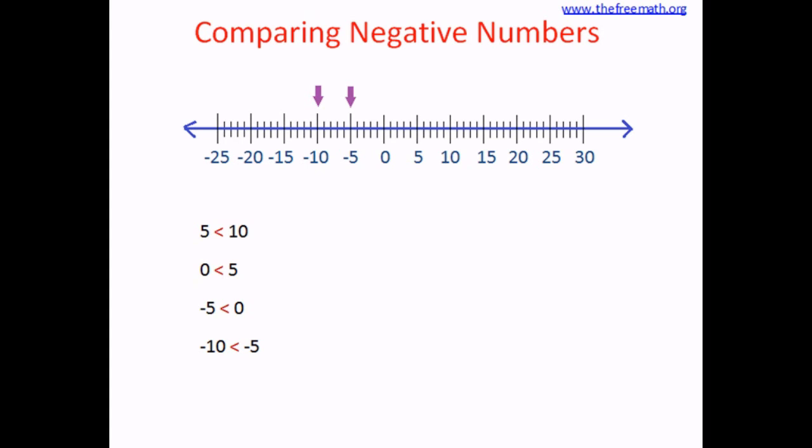Looking at the number line, here are some basic rules: all positive numbers are on the right-hand side of 0 and are greater than 0. Zero itself is neither positive nor negative. All negative numbers are smaller than 0 — or equivalently, 0 is greater than all negative numbers. All negative numbers are on the left-hand side of 0.